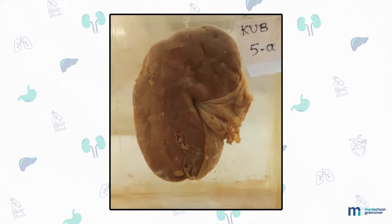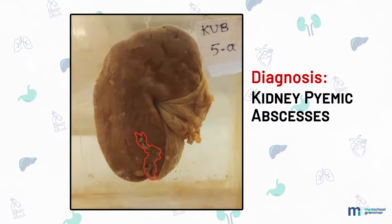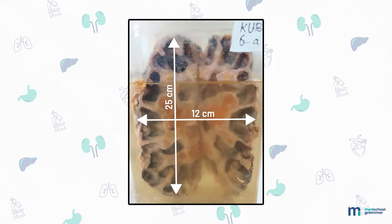Specimen of kidney measuring 8 by 5 by 1.5 centimeter. Capsule stripped off. Subcapsular surface shows multiple pale yellowish-white areas of varying sizes; one at lower pole shows necrotic material. Diagnosis: kidney pyemic abscesses.